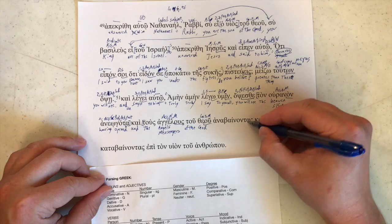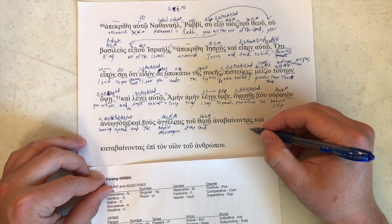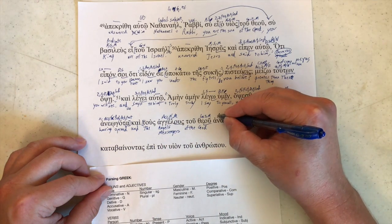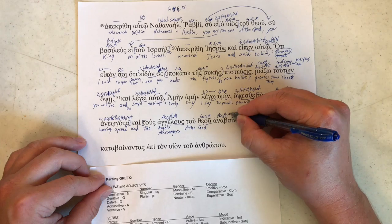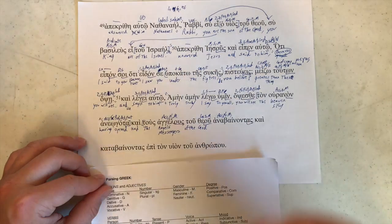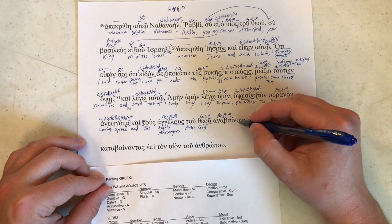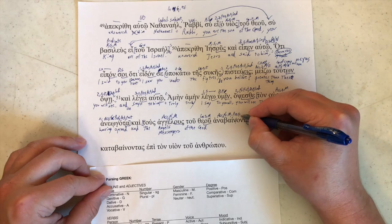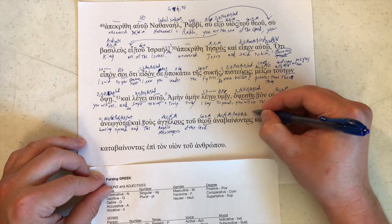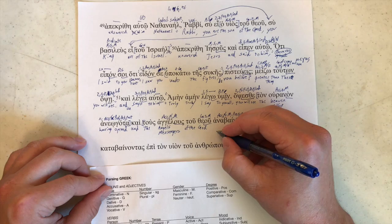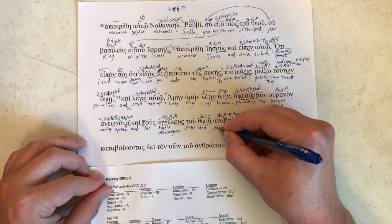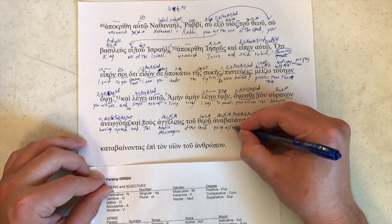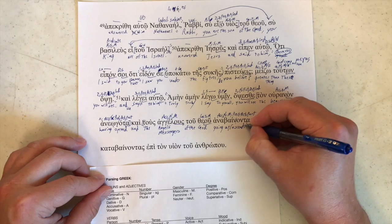Anabainontas. Alpha sigma here tells us that this is accusative plural, masculine. So that matches tous angelous. And this is anabainō. So I believe this is the present stem right there. Active. And of course another participle. And this means going up or, if you prefer the word, ascending.